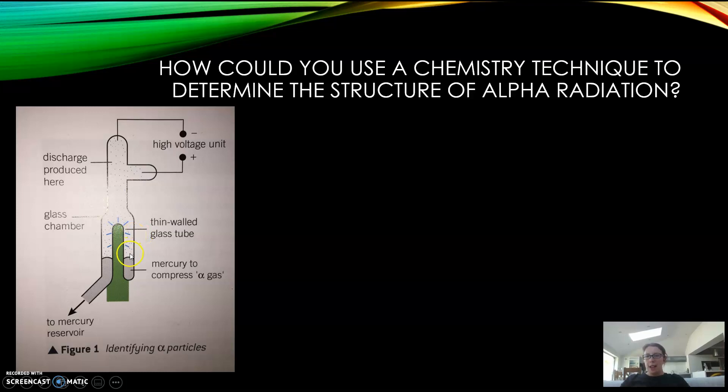What we've got here is a glass chamber with mercury which will compress some alpha gas. The gas is put inside the gas chamber with a thin glass tube, and then you have a high voltage unit across here with this gas, used to determine the structure of the alpha inside.